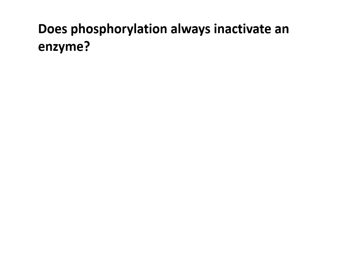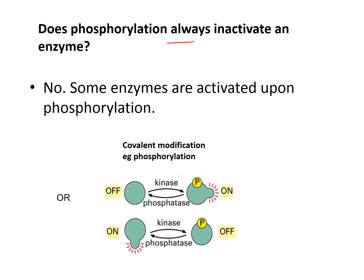Does phosphorylation always inactivate an enzyme? The answer is no — some enzymes are activated upon phosphorylation. It depends on the type of enzyme: some are switched on by phosphorylation while others are switched off. For reference, the regulation of enzyme activity by phosphorylation is also known as covalent modification.